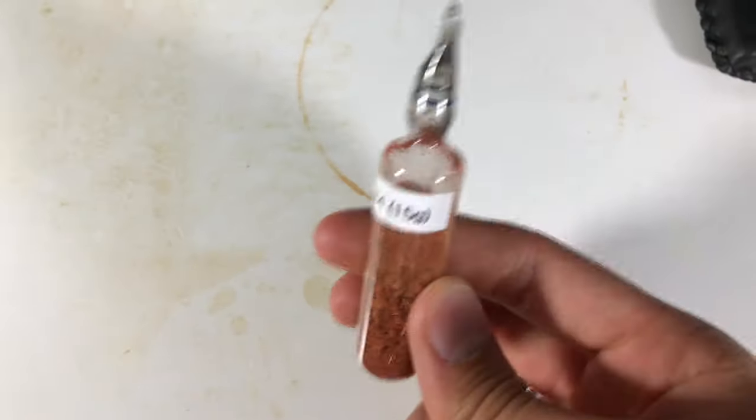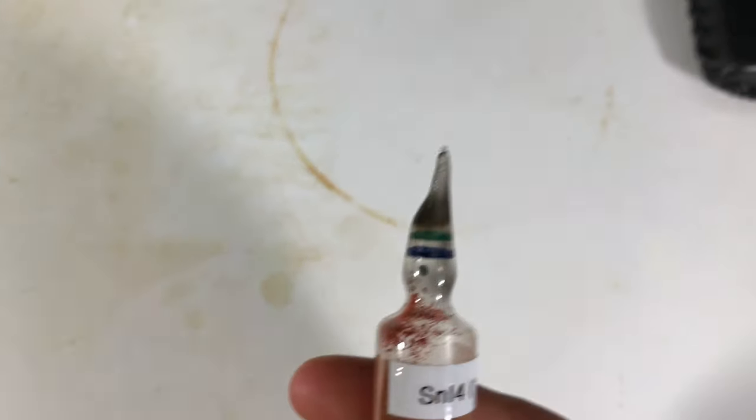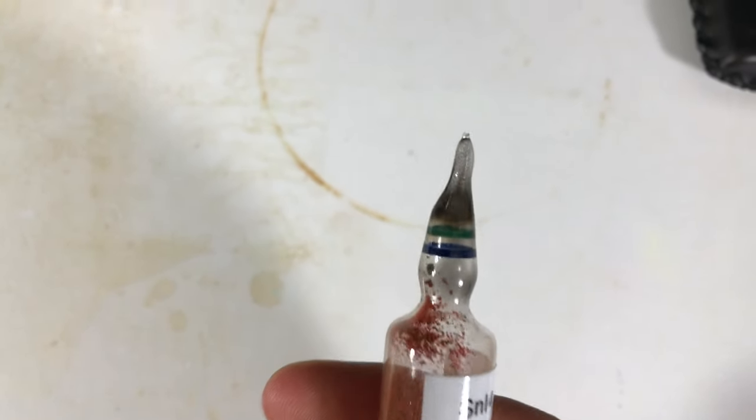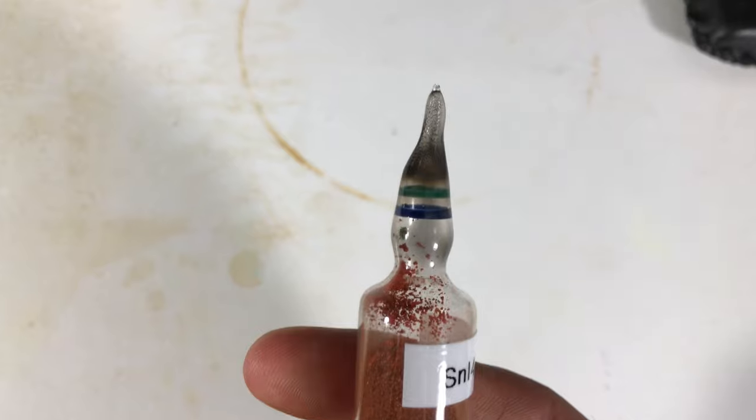Here you can have a closer look at our ampule product. Tin(IV) iodide has a somewhat orange or yellow color.